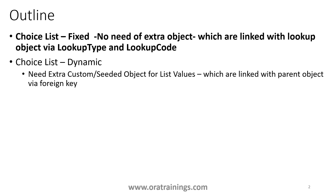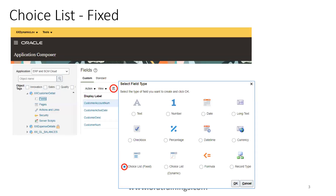Let's see what steps are involved to design this choice list component of fixed type. First, assuming you already have a custom object, you select and click on Fields, then click on Custom and select the new field icon. Here you select choice list fixed as the field type and click OK.